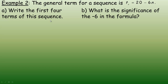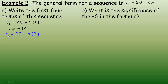In example 2, the general term for a sequence is given by the nth term equals 20 minus 6n, and we're asked to write the first four terms. For the first term, we put 1 in place of n: 20 minus 6 equals 14, so the first term is 14. For the second term, 20 minus 12 is 8. For the third term, 20 minus 6 times 3 equals 20 minus 18 equals 2. So the third term is 2.